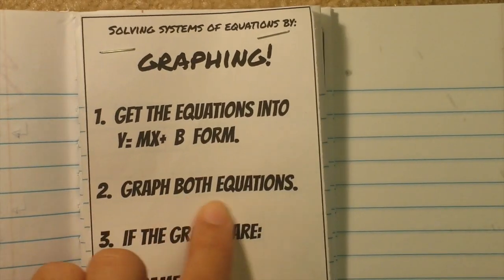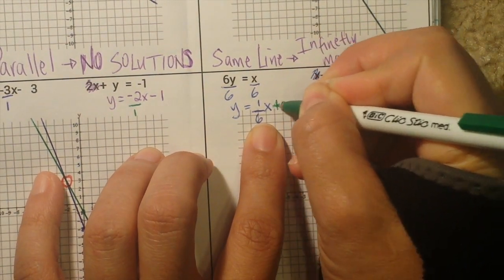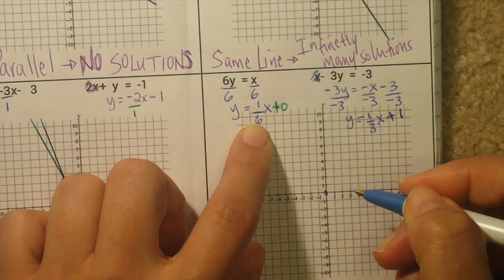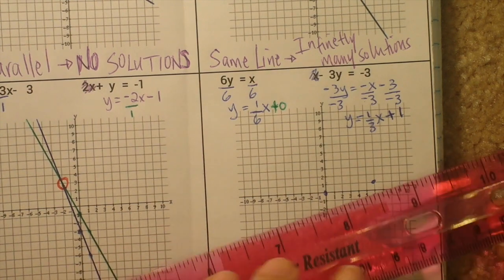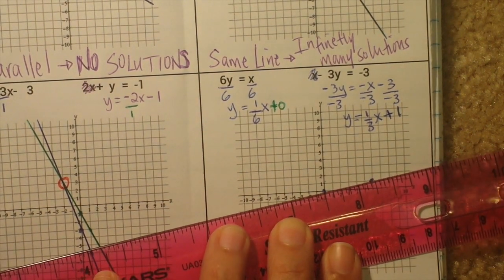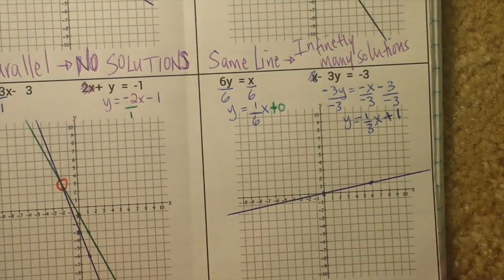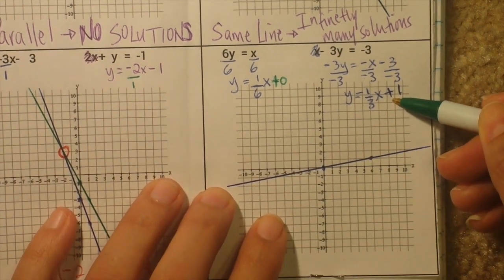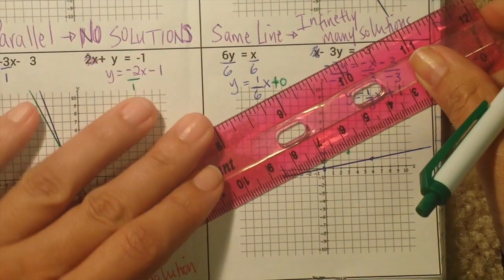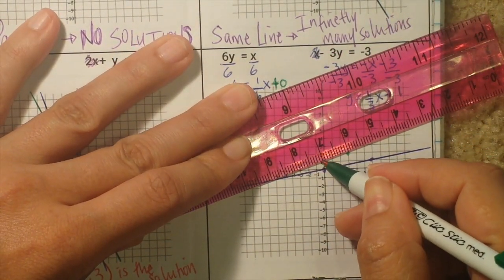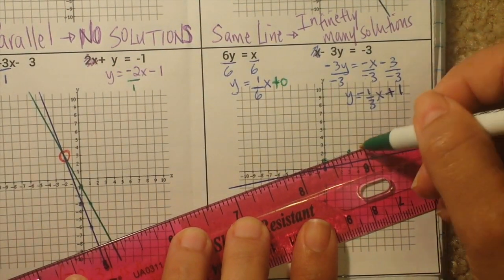Then graph both equations. The first has no y-intercept, so start at the origin and go up 1, right 6. Take a ruler and draw the line. Then take a different color pen or pencil for the second line. Start at plus 1 and go up 1, right 3. Take a ruler again, because wherever these two lines intersect is the solution.